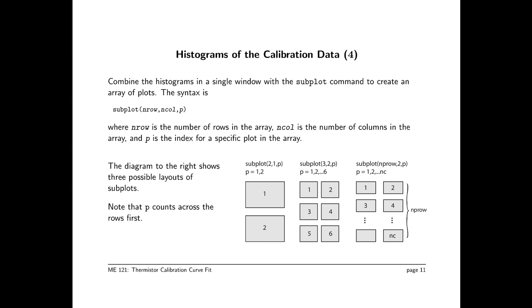You can see three examples here of the subplot command. Subplot 2, comma 1 says I want an array, an arrangement of two rows, one column. That means two plots, one above each other. Subplot 3, comma 2 says I want three rows with two columns. And subplot nprow, comma 2 says I want some variable number, nprow and two columns. And for each of these sequences, we step through the specific image that we want to work on with the p variable.